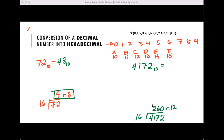Next, let's divide this again by 16. 260 divided by 16 is 16 with the remainder of 4. Next, let's divide it again. 16 divided by 16 is 1 with the remainder of 0.